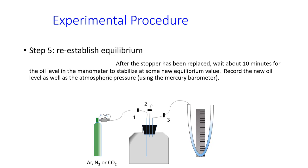You'll also, to convert P1 and P3 to atmospheric pressure, or rather to absolute pressure, you'll need to know the atmospheric pressure so you can record this from the mercury barometer that's on the wall of the lab.